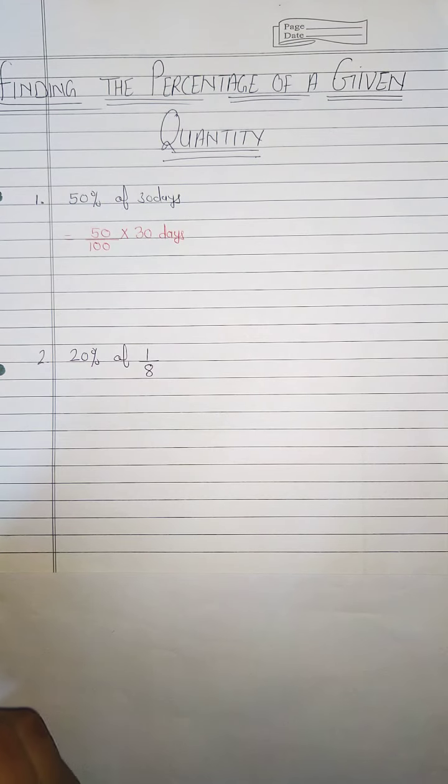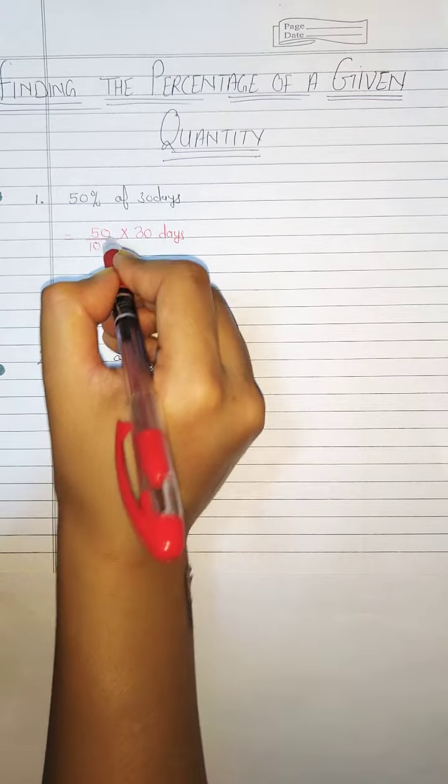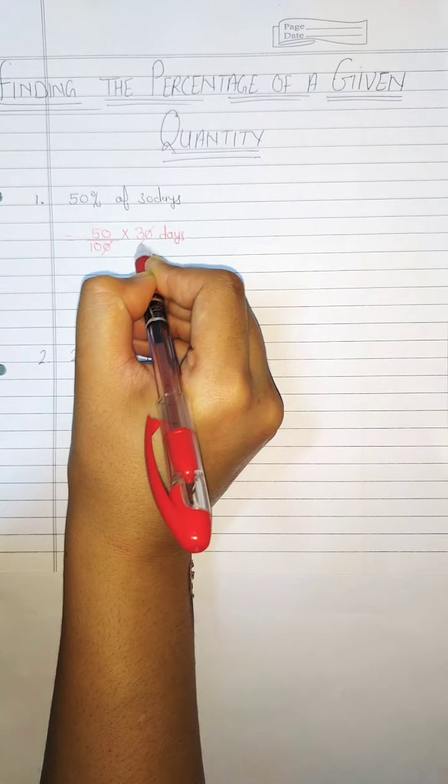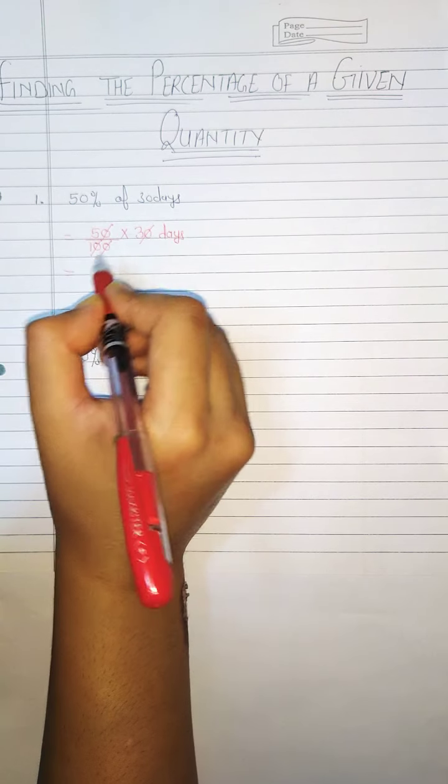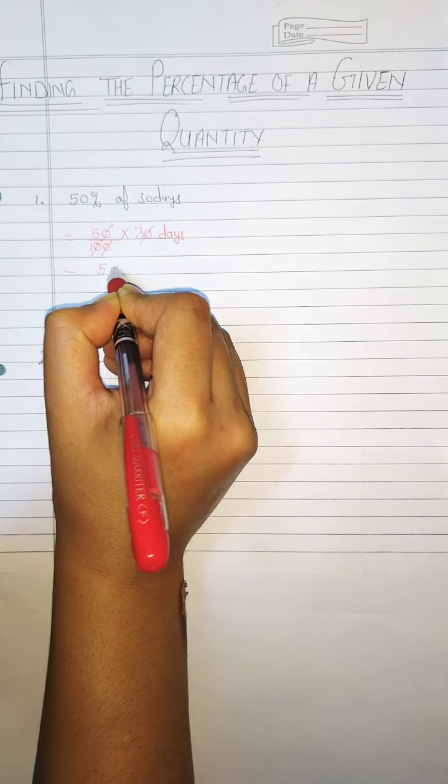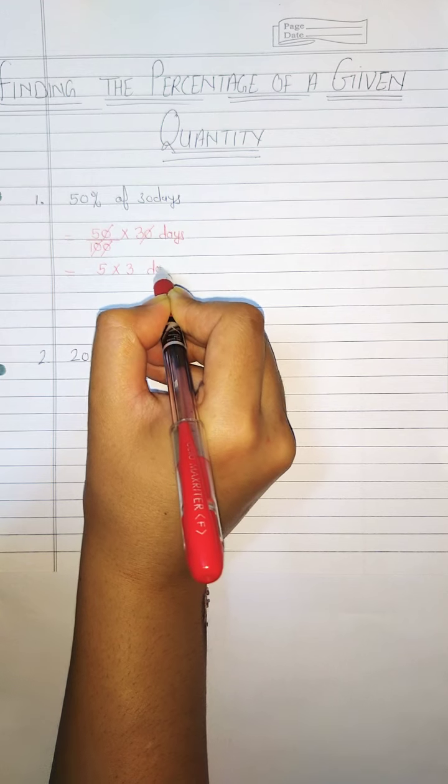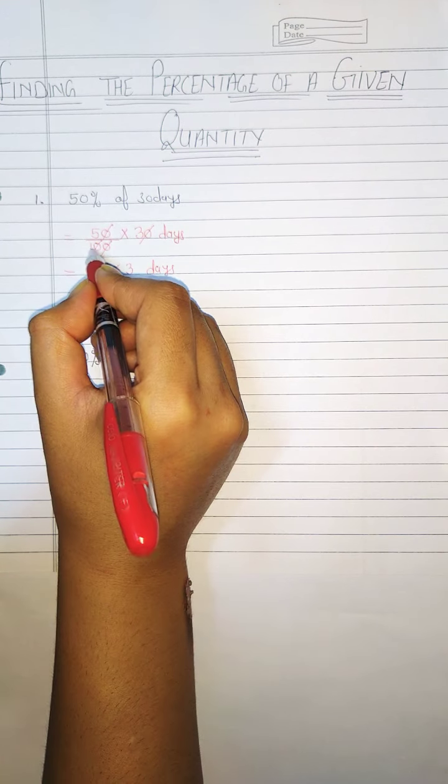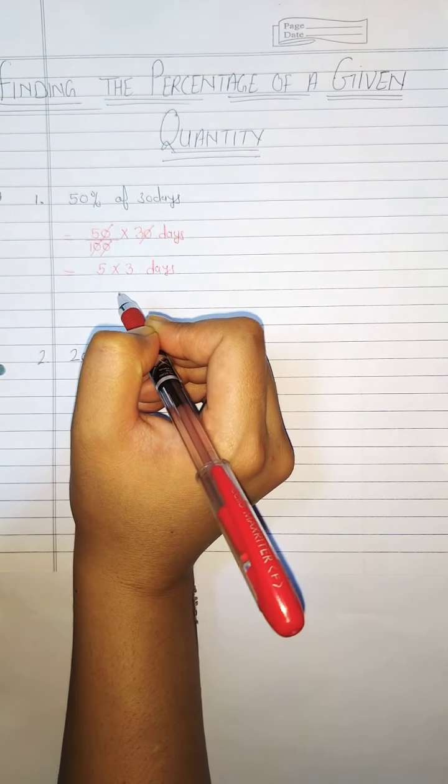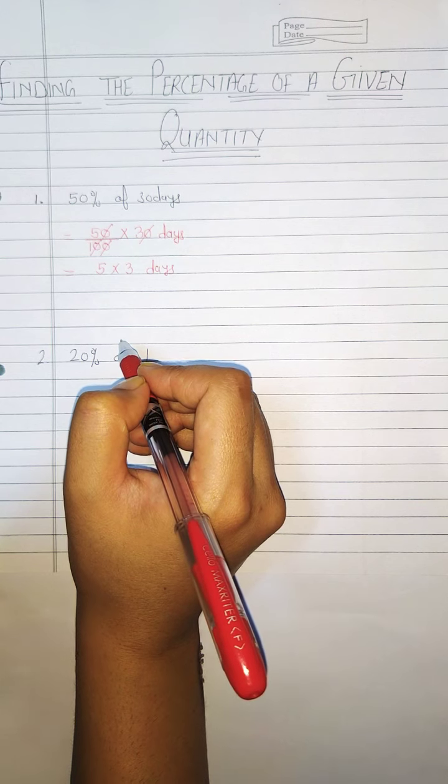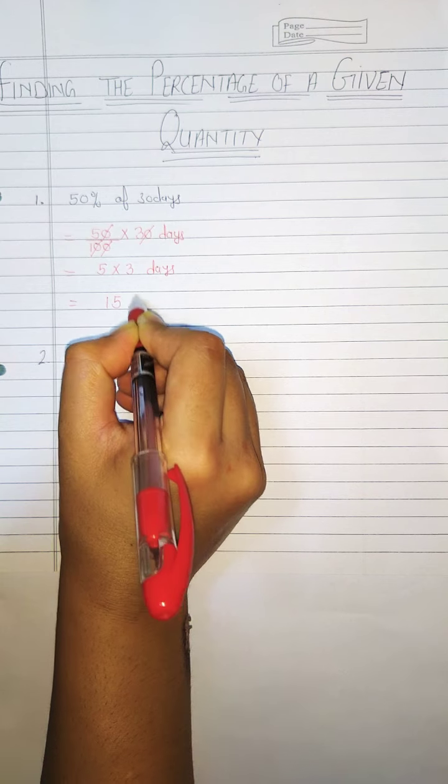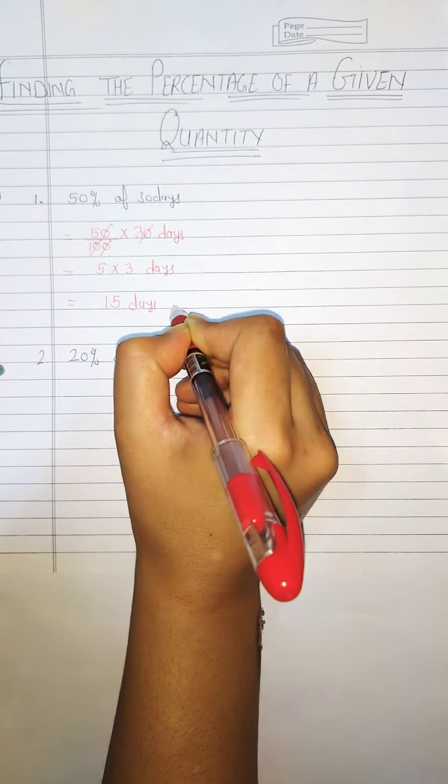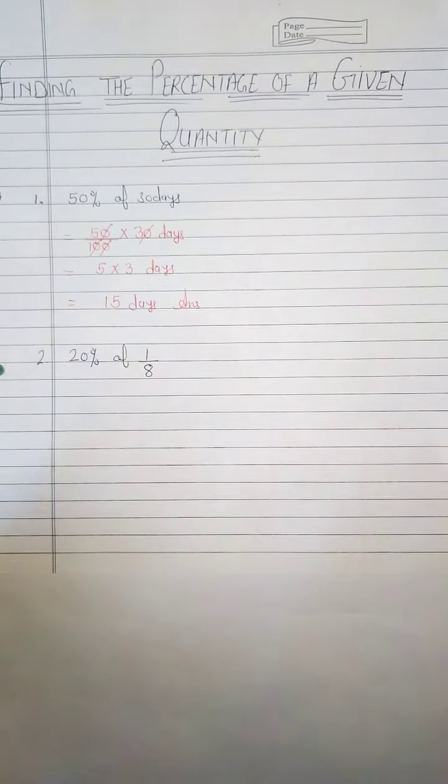Now we will do cancellation. This zero to this zero, this zero to this zero. Now in numerator we have 5 into 3 days and in denominator we have only 1. So there is no need to write this one. So 5 3s are 15, 15 days and this is an answer.